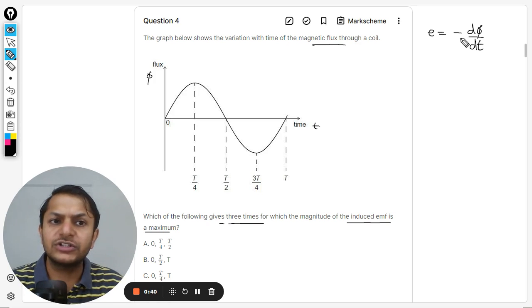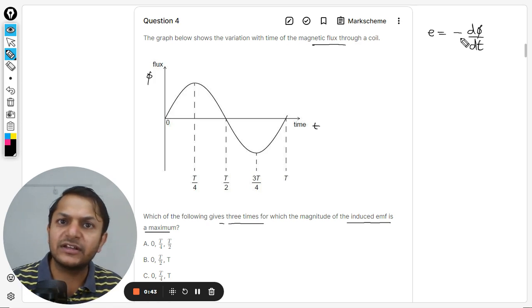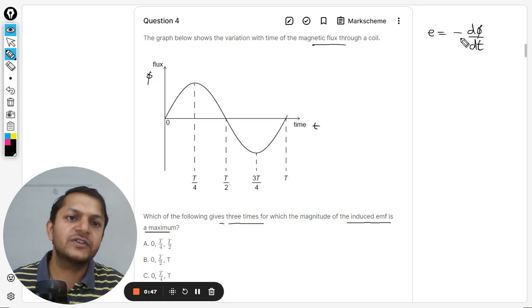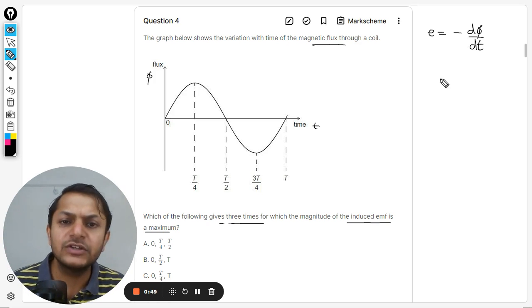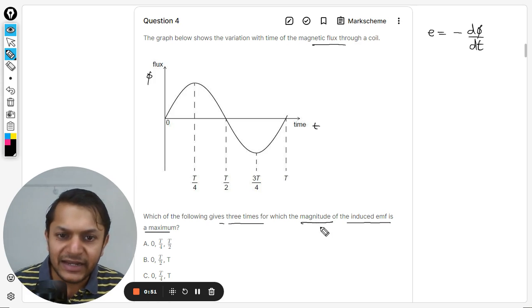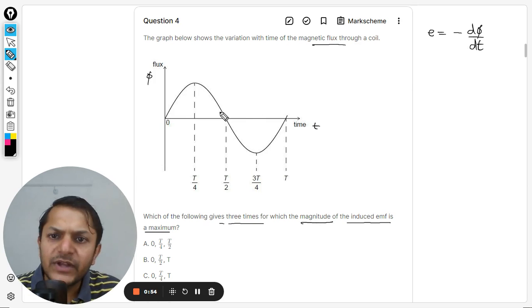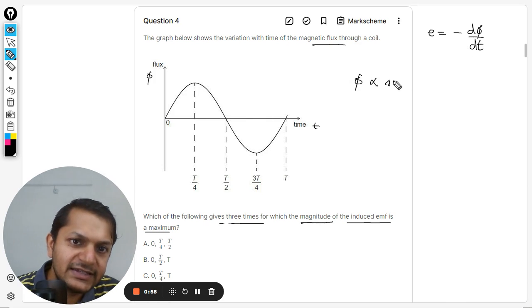You can write in whatever manner you prefer. The negative sign only shows the Lenz law, that the induced current will be such that it will be opposing the change that is bringing the induced current in the first place. But we are not concerned with that because we are only concerned with the magnitude here.